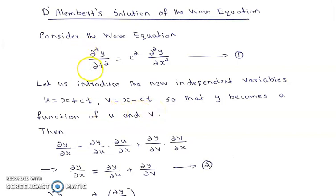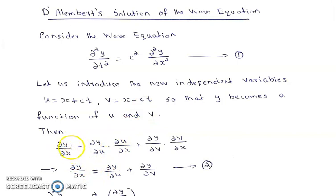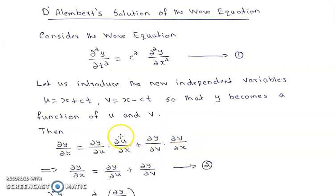Now we have to find the partial derivatives in the wave equation, that is ∂²y/∂t² and ∂²y/∂x². First we find ∂y/∂x. Since y is a function of u and v, and u and v are functions of x and t, by chain rule: ∂y/∂x = (∂y/∂u)(∂u/∂x) + (∂y/∂v)(∂v/∂x). Since u = x + ct, ∂u/∂x = 1, and since v = x − ct, ∂v/∂x = 1. Substituting, we get ∂y/∂x = ∂y/∂u + ∂y/∂v.